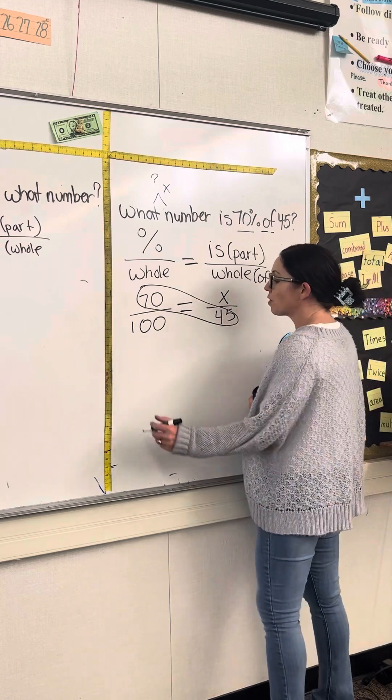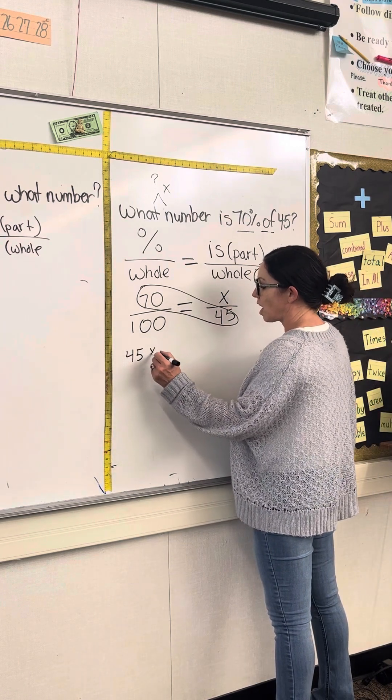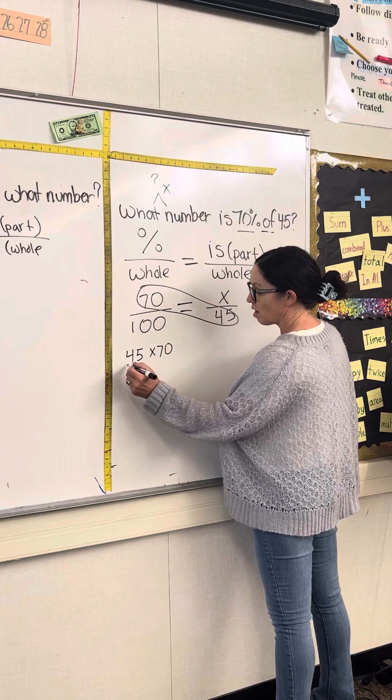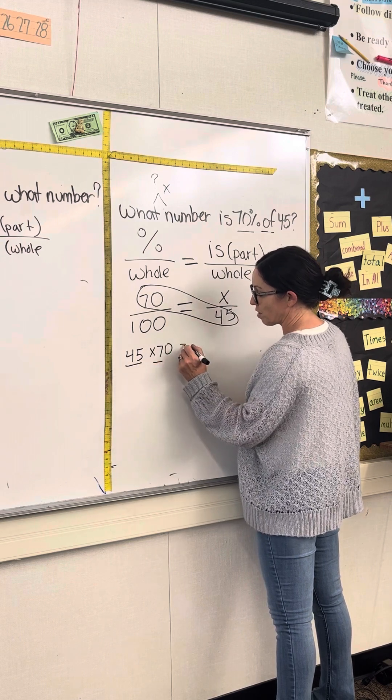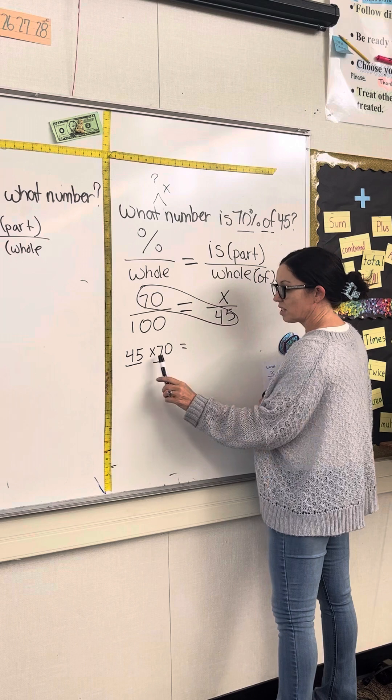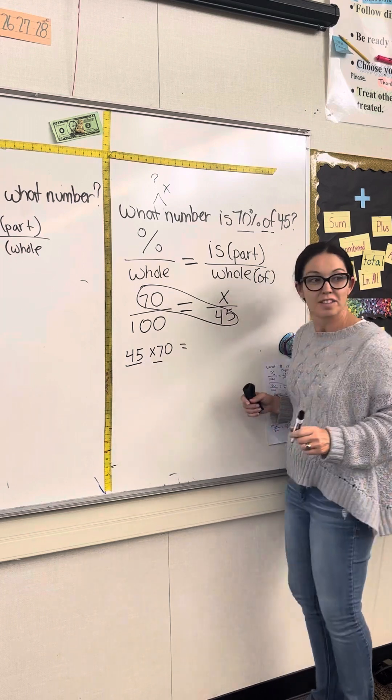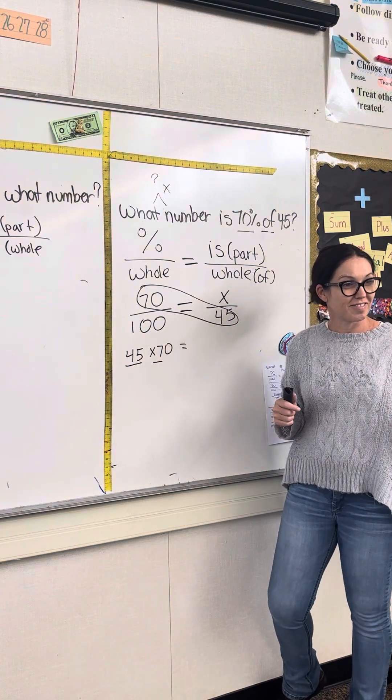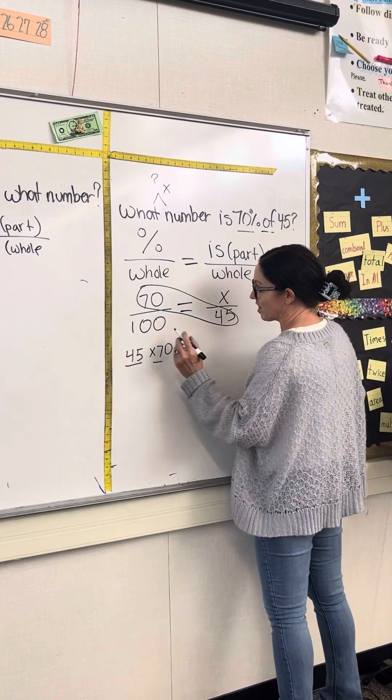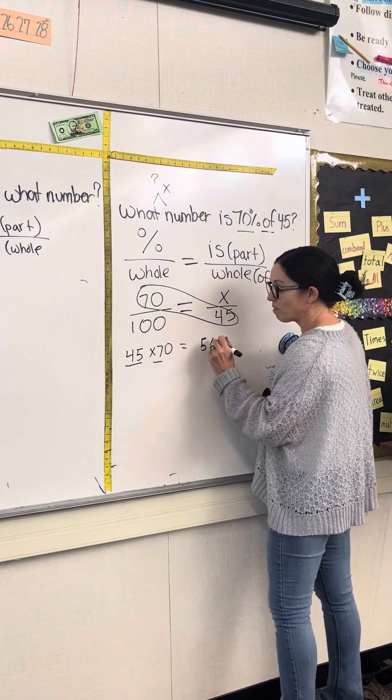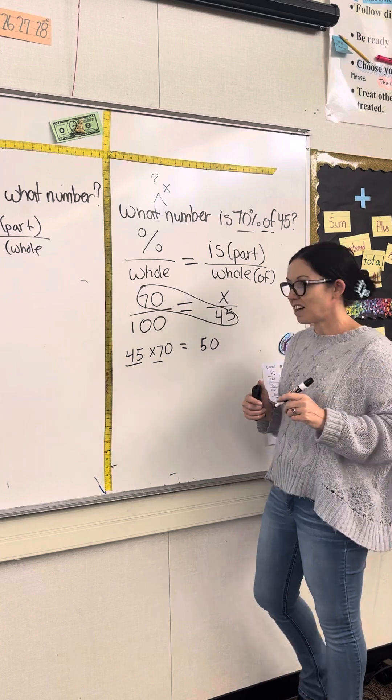So we'll go ahead and multiply 45 times 70. I'll multiply my base here. 45 times 7. 7 times 5 is 35. 3,150.